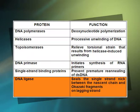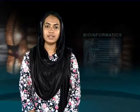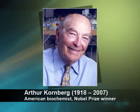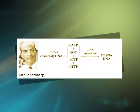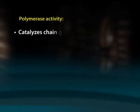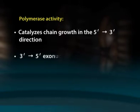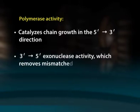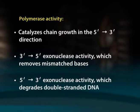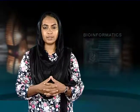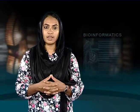In the late 1950s, Arthur Kornberg successfully identified and purified the first DNA polymerase, an enzyme that catalyzes the replication reaction. DNA polymerases catalyze the one-by-one addition of deoxyribonucleotide units to a DNA chain. Polymerase activity catalyzes chain growth in the 5' to 3' direction, with 3' to 5' exonuclease activity to remove mismatched bases, and 5' to 3' exonuclease activity which degrades double-stranded DNA.